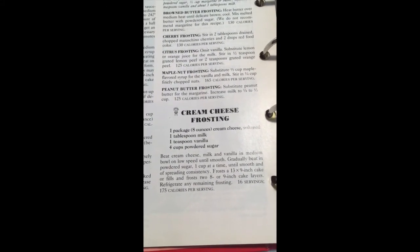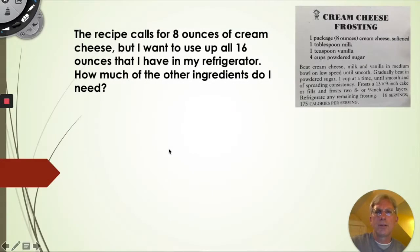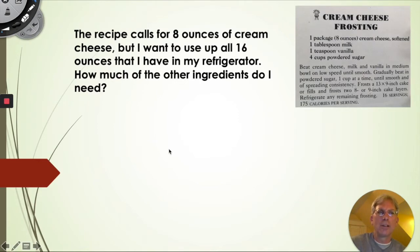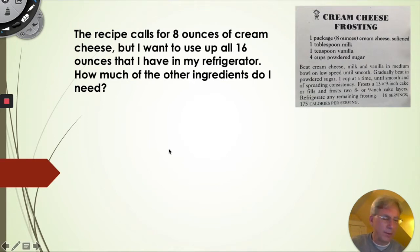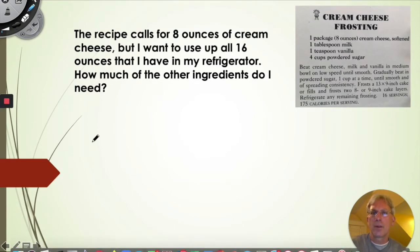Let's take a look at some of the math that will enable us to do that. The issue is that I have 16 ounces of cream cheese that I want to use up, but the recipe only calls for eight ounces of cream cheese. I need to find a way to adjust so that I can use all of what I want and still follow the recipe. There are a couple of ways to do this, but I'm going to start with ratios.